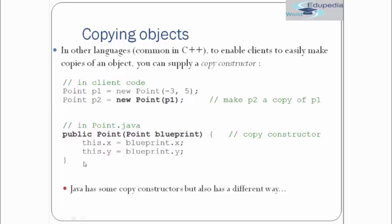You can see the copy constructor which will be written. This is something we can also do in Java, where we can create a new object by copying from another object. It is called copy constructor and it is widely famous in C++. In the copy constructor we have public point and then we are passing the point object as a parameter, and from that point object we are initializing all the data members to our object.